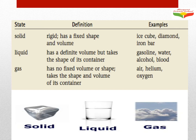Let's check out examples for solid things: a bar of iron, or a diamond — diamond is an example of a solid. An ice cube is another example of a solid. And as I said, examples for liquid things are gasoline, water, alcohol, and blood.